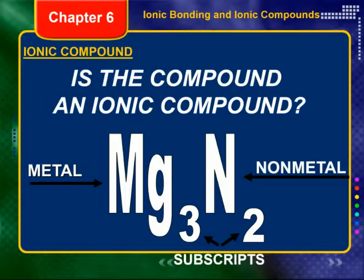So now I have, overall, a plus six and a minus six. Those balance out. So MgN is not an ionic compound — it doesn't exist. But Mg₃N₂ is an ionic compound that exists.